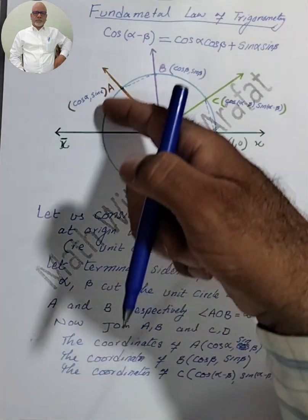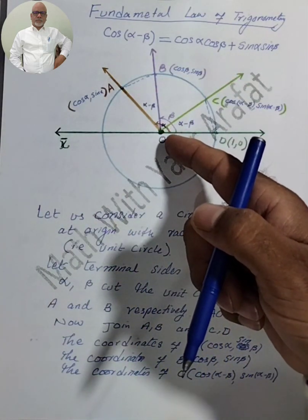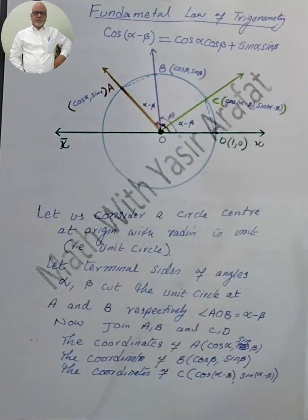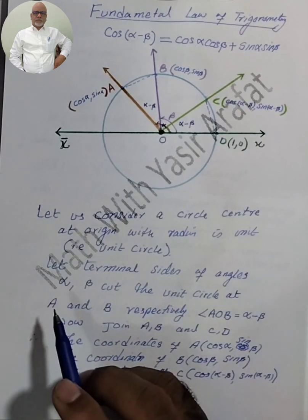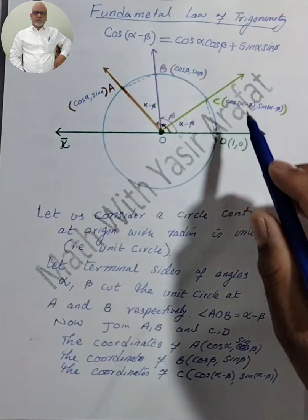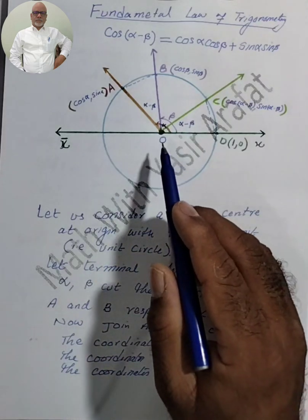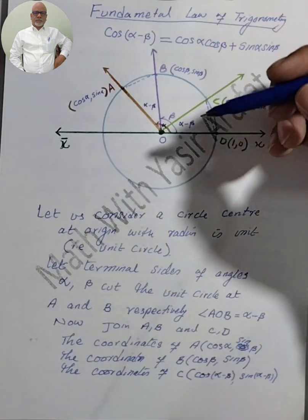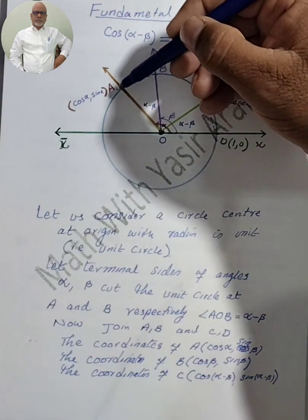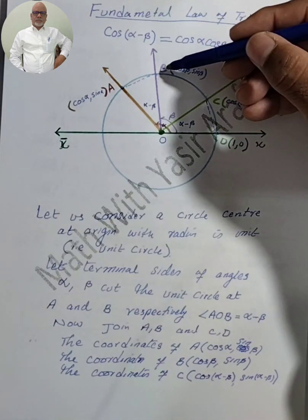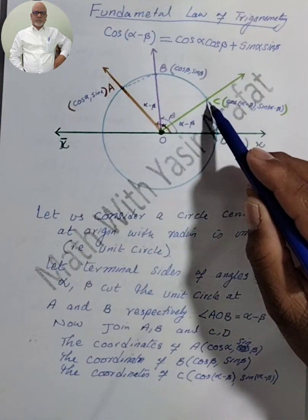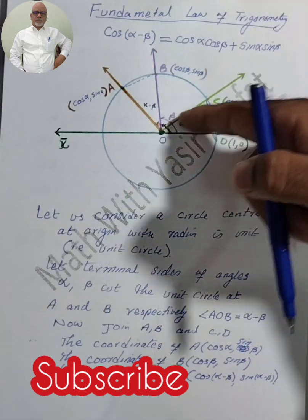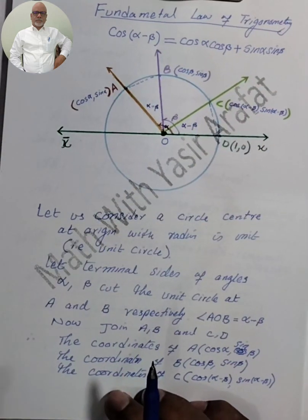Here we have to consider a unit circle, center at the origin. A unit circle means the radius of this circle is one. We are going to consider three terminal arms: one is A, another one is B, and the third one is C. So A, B, C are the three terminal arms.